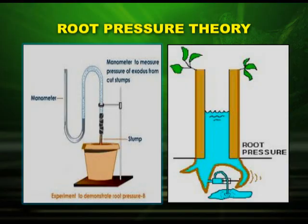Root pressure theory can be demonstrated by a simple experiment. In the diagram, you see a watered plant which has been connected with a manometer to measure the pressure of exudate from cut stems. The adjacent diagram shows the exudation that demonstrates root pressure.